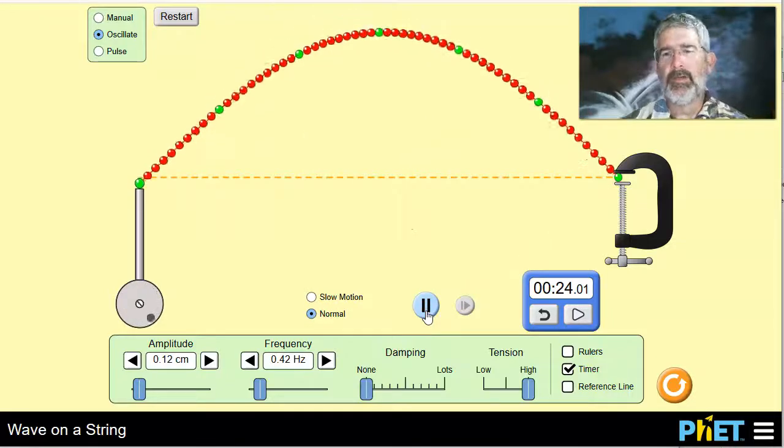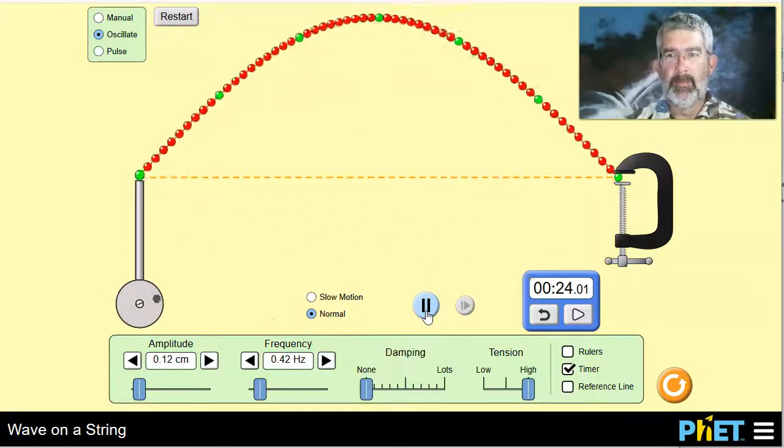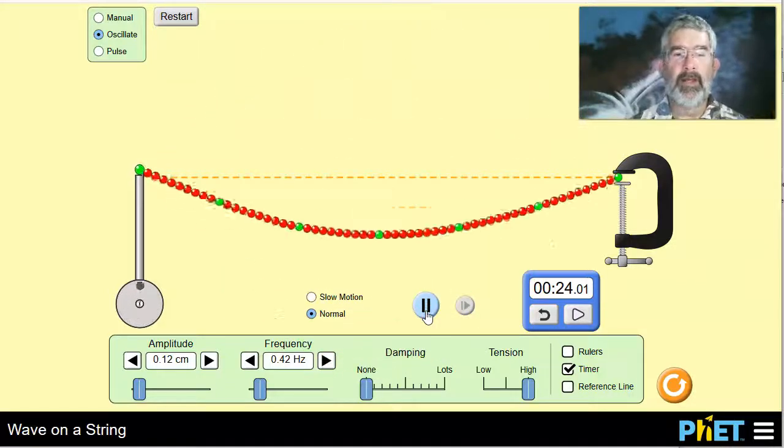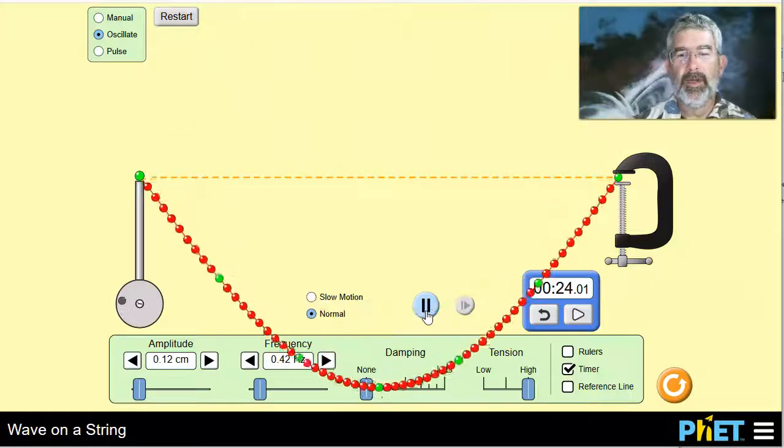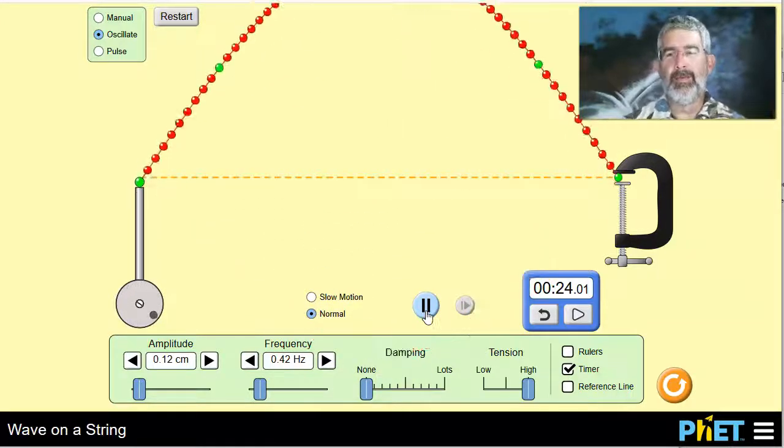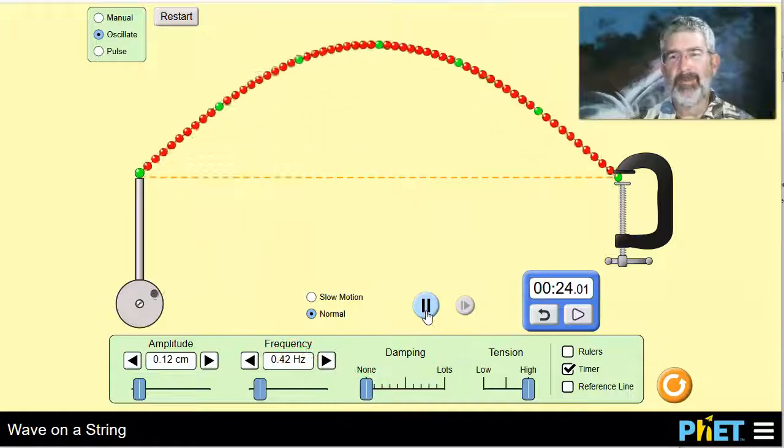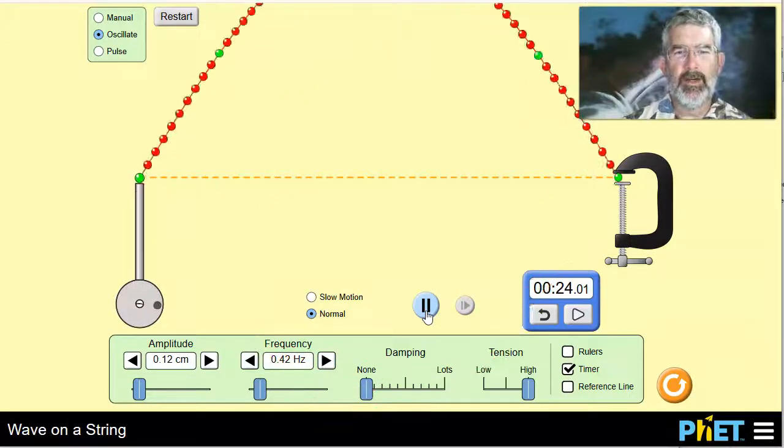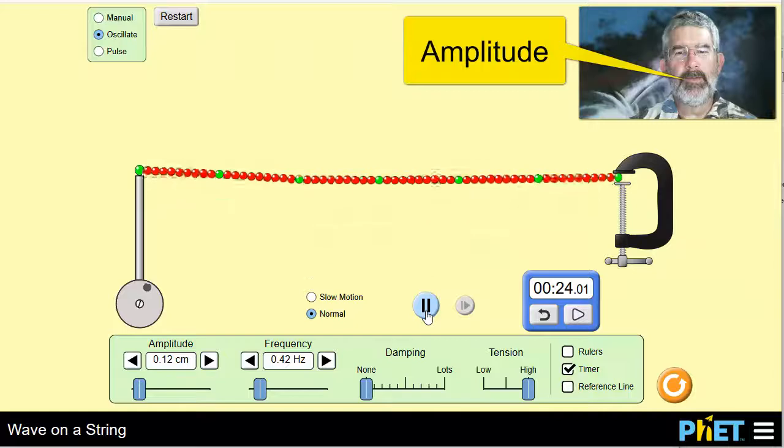That the frequency that my forcing function is at is the same frequency that the spring system itself wants to vibrate. And what happens is you get resonance. This just keeps building higher and higher and higher frequency.